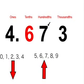And if it is 5, 6, 7, 8, or 9, we round up. Our number is 7, so we round up. So our answer is 4.7.